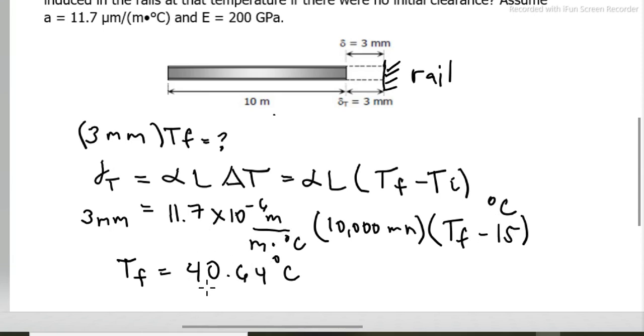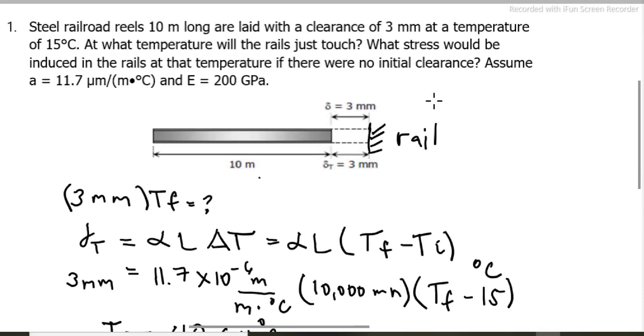The second question is: what if the rail just touches exactly? So the second condition: here is the rail in place. Earlier in the first condition there was clearance; now in the second there is none. What is the stress?